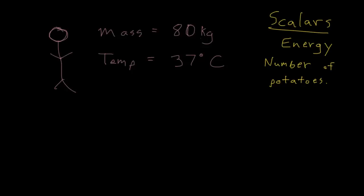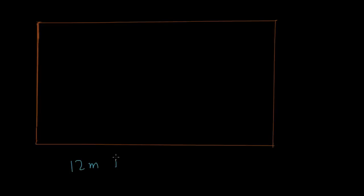But there are some things that need to be specified by more than one number. As an example, let's say I'm standing in a room. If I tell you that I'm standing 12 meters away from this wall, that's not actually enough information for you to know where I am. I could be right here, but I could also be over here.